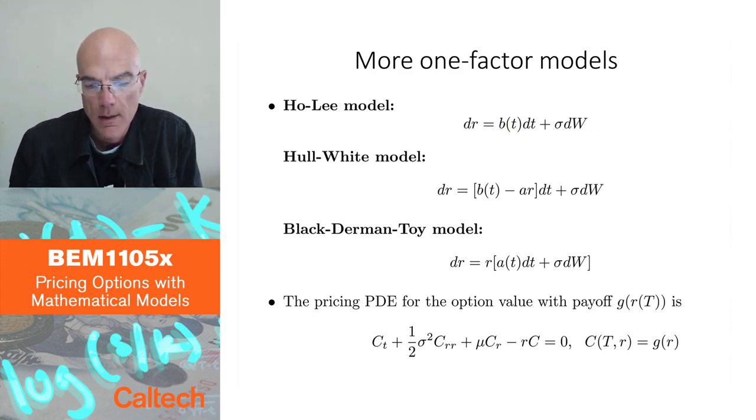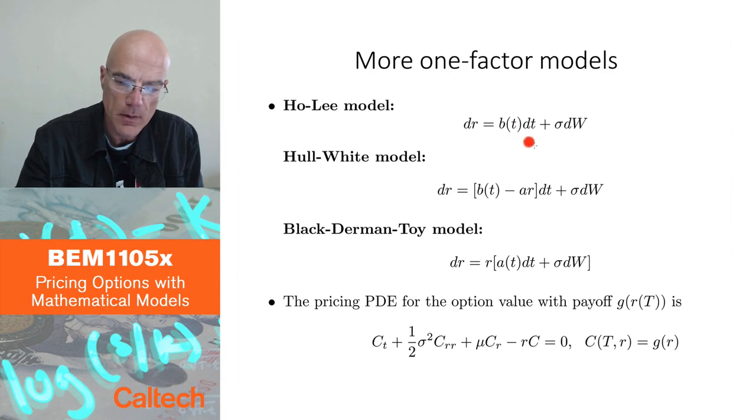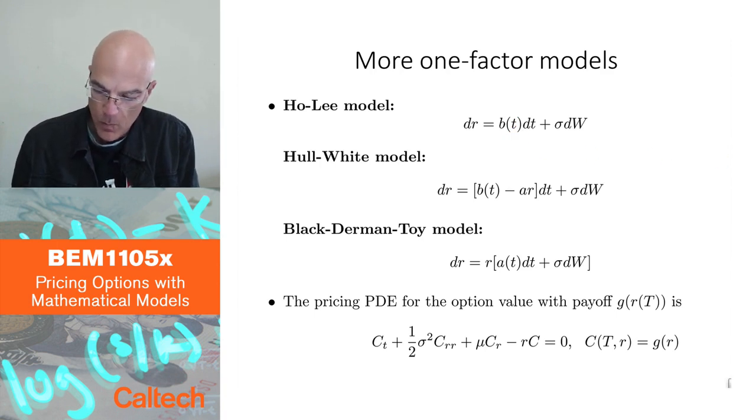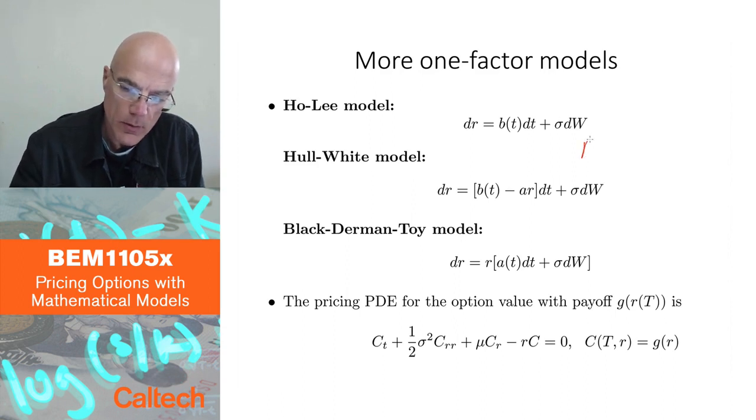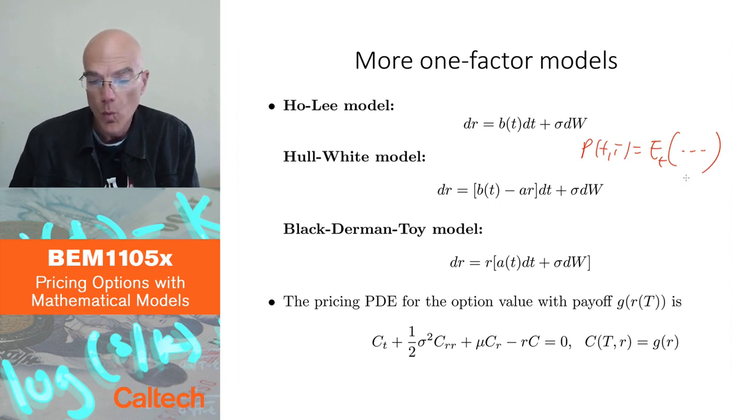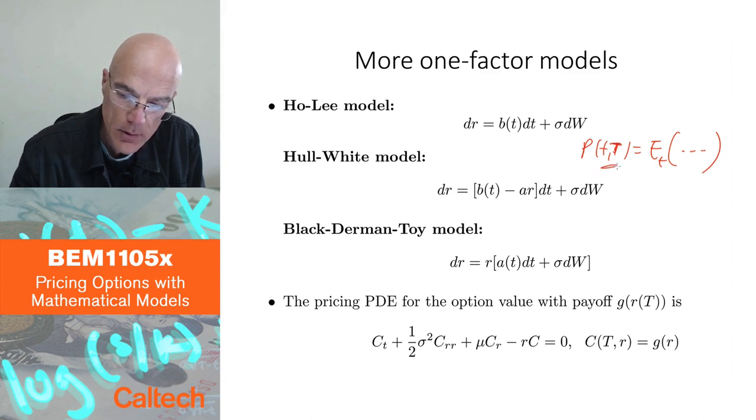Now, why did Ho and Lee suggest something like this? Instead of having fixed parameters, there is a parameter which varies with time. Well, it's again related to the calibration with our usual formula that p(t,T) equals the expectation of the discount factor. When you do calibration, and if you have bonds of many maturities capital T, and you're trying to fit today's prices for bonds of many maturities,